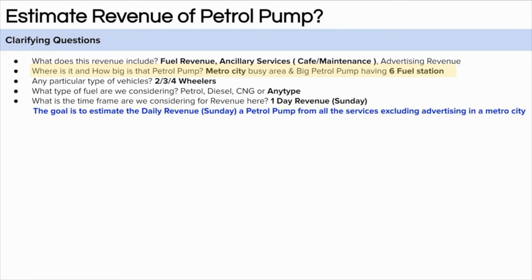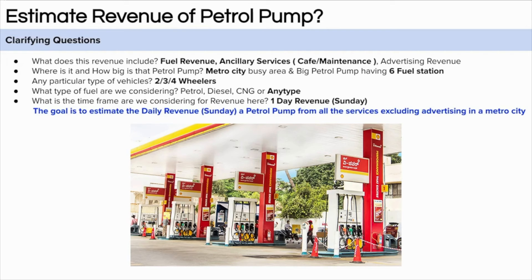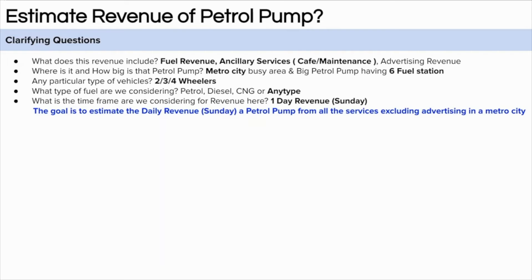The second question is about the petrol pump itself — where is it located and how big is it? If the petrol pump is big, it can serve more concurrent customers with many filling stations. Let's assume there are six filling stations, so six users can concurrently fill their vehicle. The petrol pump is located in a busy area in a metro city with six fuel stations.